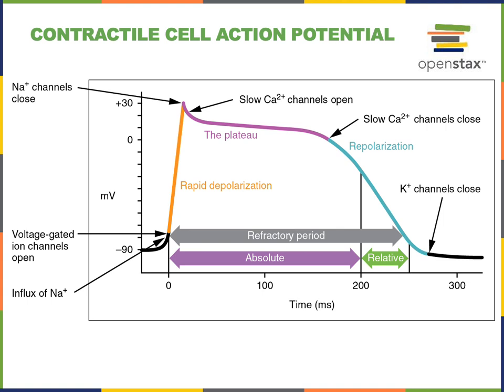Voltage-gated calcium channels also open. At the same time, voltage-gated potassium channels open, so both calcium and potassium channels are open simultaneously during the plateau phase of the contractile cell action potential, shown with the purple line. Calcium is flowing into the cell while potassium is flowing out, and the inward flow of positive charges from calcium is roughly balanced by the outward flow of positive charges from potassium — which is why the membrane potential maintains a stable value during the plateau phase.